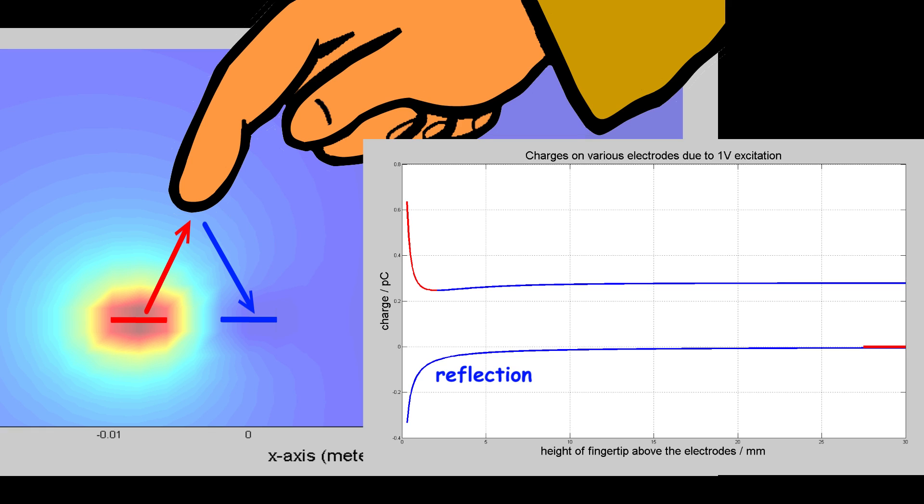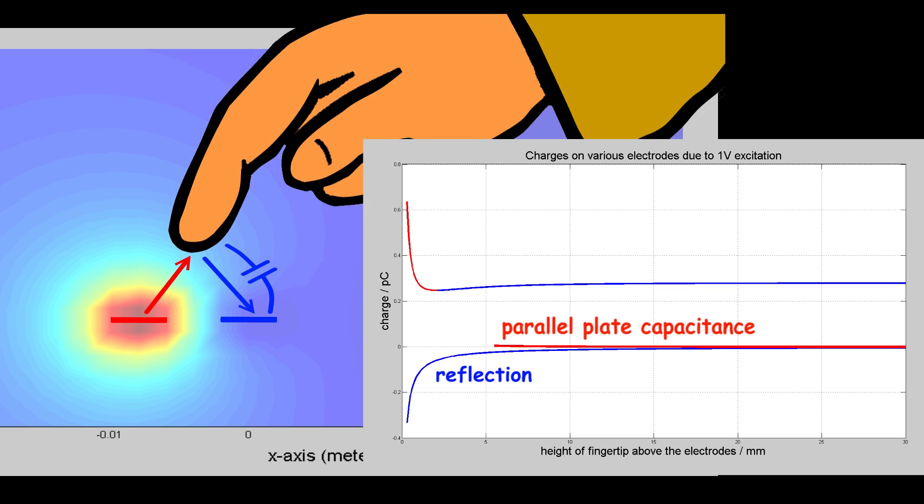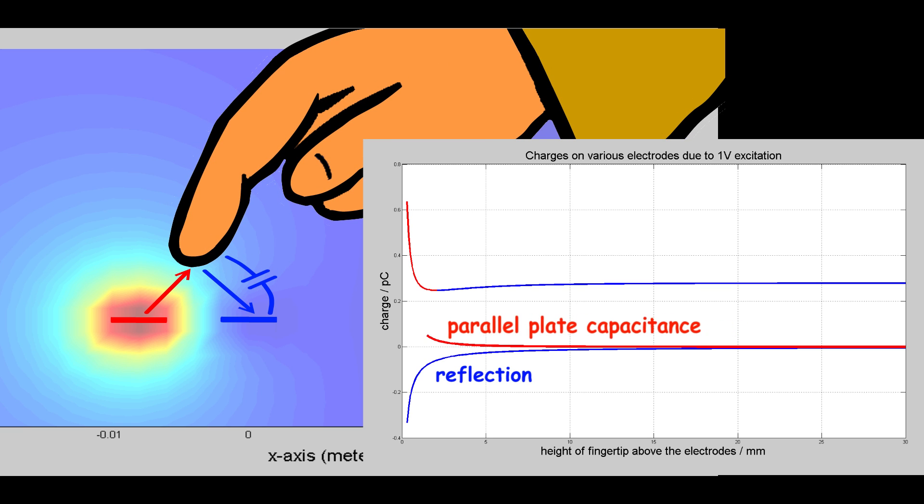The parallel plate capacitor is the cause of the turning point. Initially, this capacitance is rather insignificant, but when the finger moves very close to the receiver, the parallel plate capacitance overtakes the reflected signal, and the total capacitance shoots up according to 1 over H.